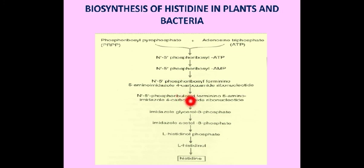As a result, imidazole-glycerol-3-phosphate is released. This is dehydrated by imidazole-glycerol-3-phosphate dehydrogenase to form imidazole-acetol-3-phosphate, which then forms L-histidinol phosphate. L-histidinol phosphate is dephosphorylated to form L-histidinol, and in the last step L-histidinol is oxidized first to an aldehyde and then to a carboxylic group by histidinol dehydrogenase, yielding histidine. Thus, histidine is synthesized from PRPP and ATP by a series of complex reactions.